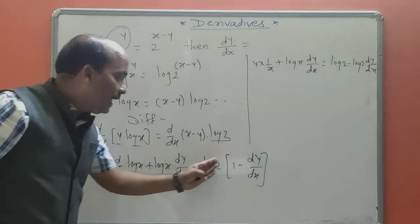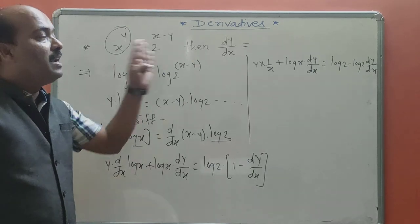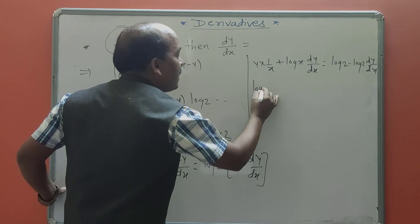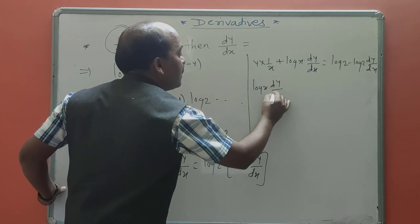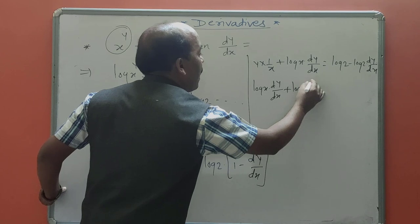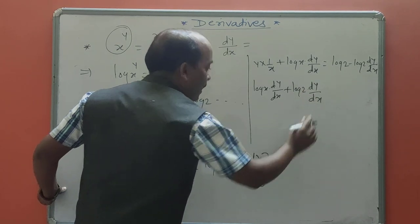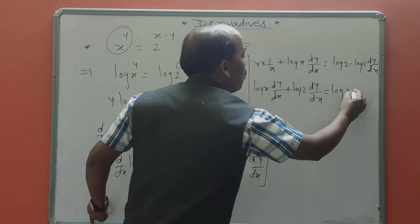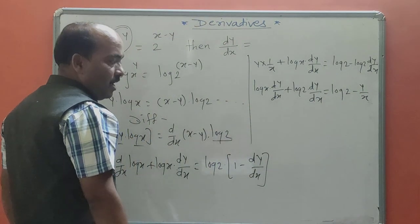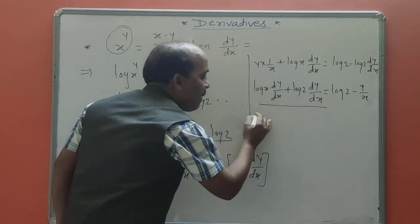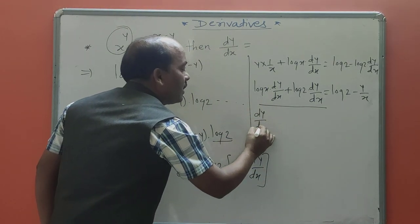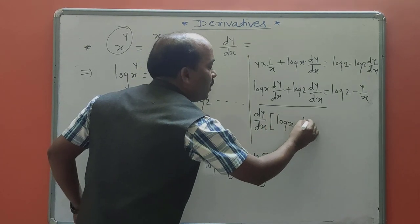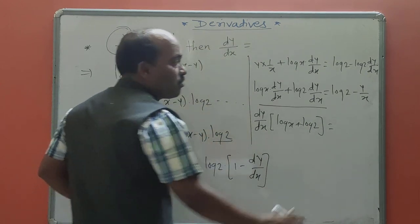Here, log 2 multiplies inside every term. Next, separate the dy/dx terms: log x times dy/dx plus log 2 times dy/dx — both are dy/dx terms. The other terms go to the opposite side, giving RHS as log 2 minus y/x. On the LHS, take dy/dx as common, leaving in the bracket log x plus log 2.